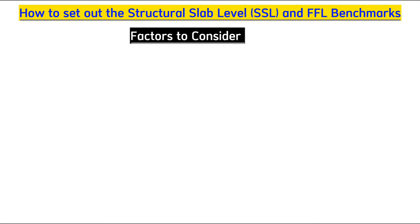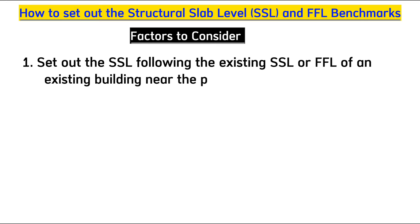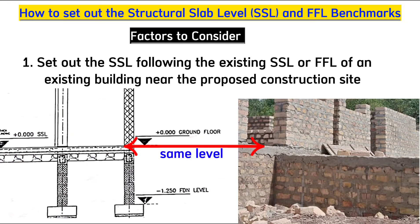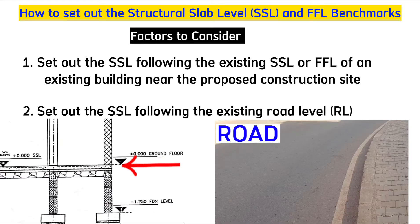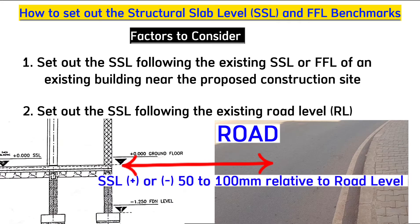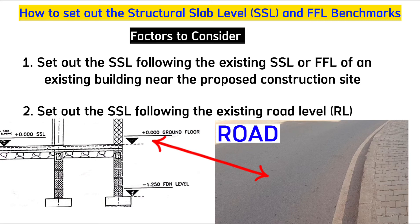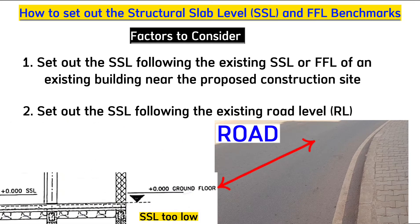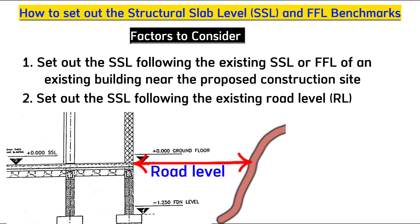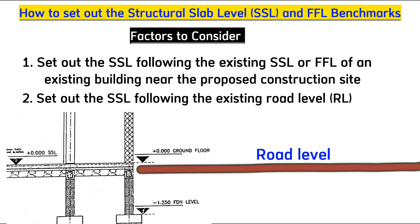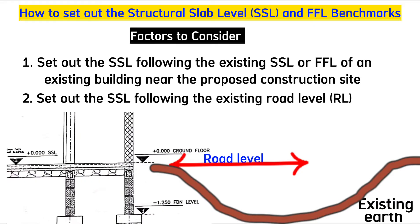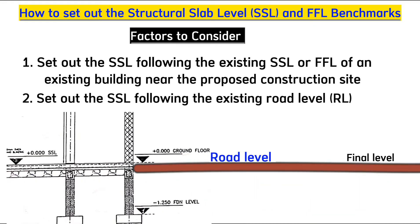We set out the structure slab level based on different factors. For example, you can set it following the existing floor level of a nearby finished building, or following the existing road level — so the structure slab level will be either plus or minus 50 to 100 millimeters of the existing road level. Avoid setting the structure slab level too high or too low compared to the road level, as this makes the building difficult to access. If the terrain is too high, cut and dispose of the earth; if too low, fill to reach a level relative to the existing road.